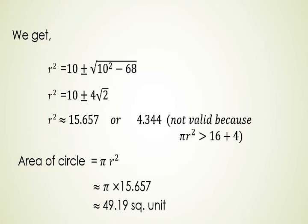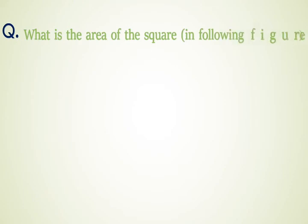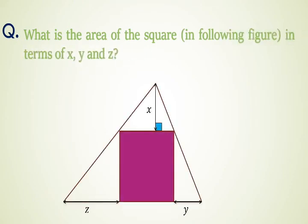Let's move to another question. What is the area of the square in the terms of x, y and z? Here in the following figure there is a triangle and a square whose base is on the base of triangle and its two vertices are touching another sides of the triangle. The distances are as shown by x, y and z here and we have to calculate the area of the square in terms of x, y and z.